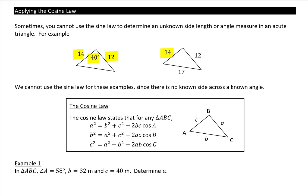And in our second example we have three sides and there are no angles. So there is no known angle across a known side, so again we cannot use the sine law. However, we have what's called the cosine law.